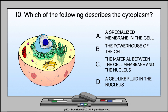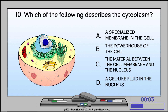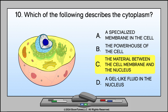Which of the following describes the cytoplasm? A. A specialized membrane in the cell? B. The powerhouse of the cell? C. The material between the cell membrane and the nucleus? Or D. A gel-like fluid in the nucleus? The answer is C. The material between the cell membrane and the nucleus.